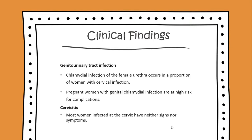Clinical findings include genital urinary tract infection, where chlamydia infection of the female urethra occurs in a proportion of women with cervical infections.